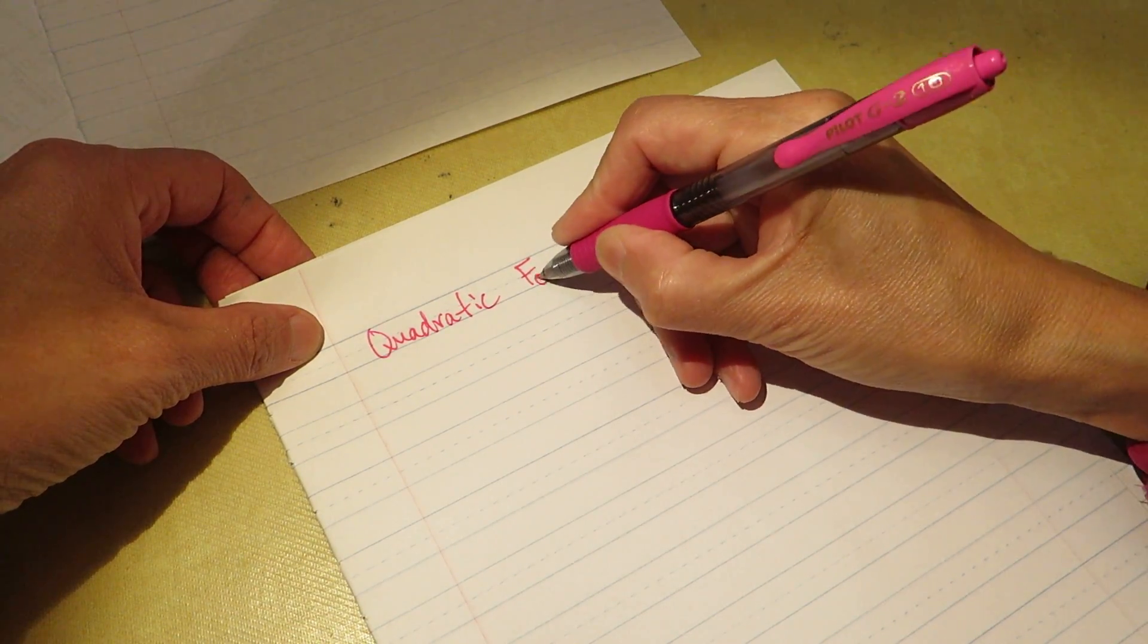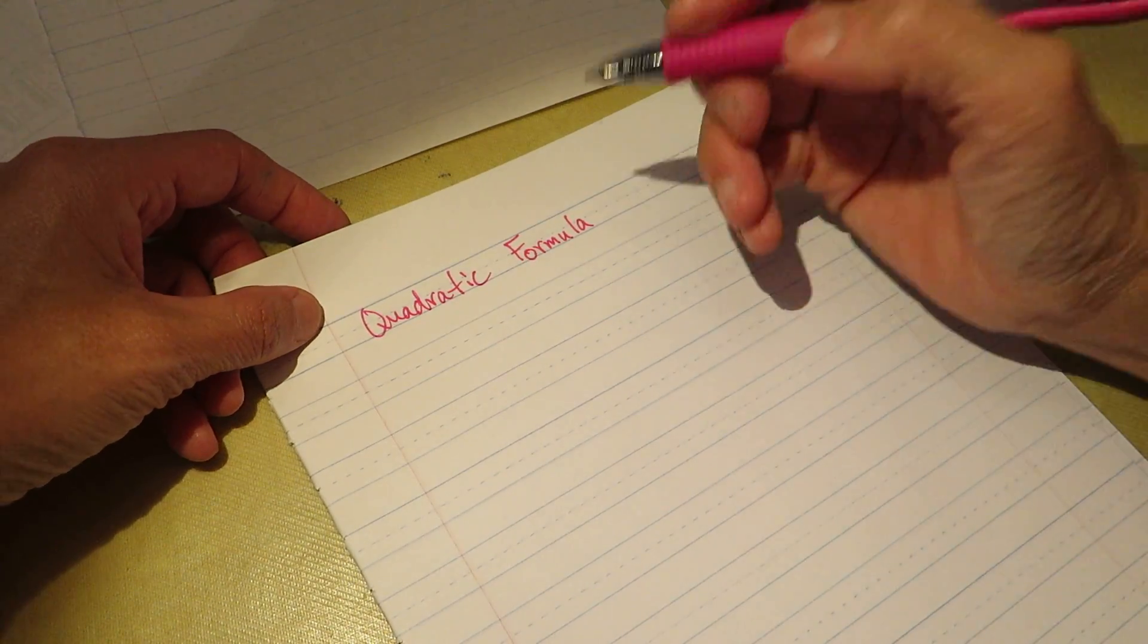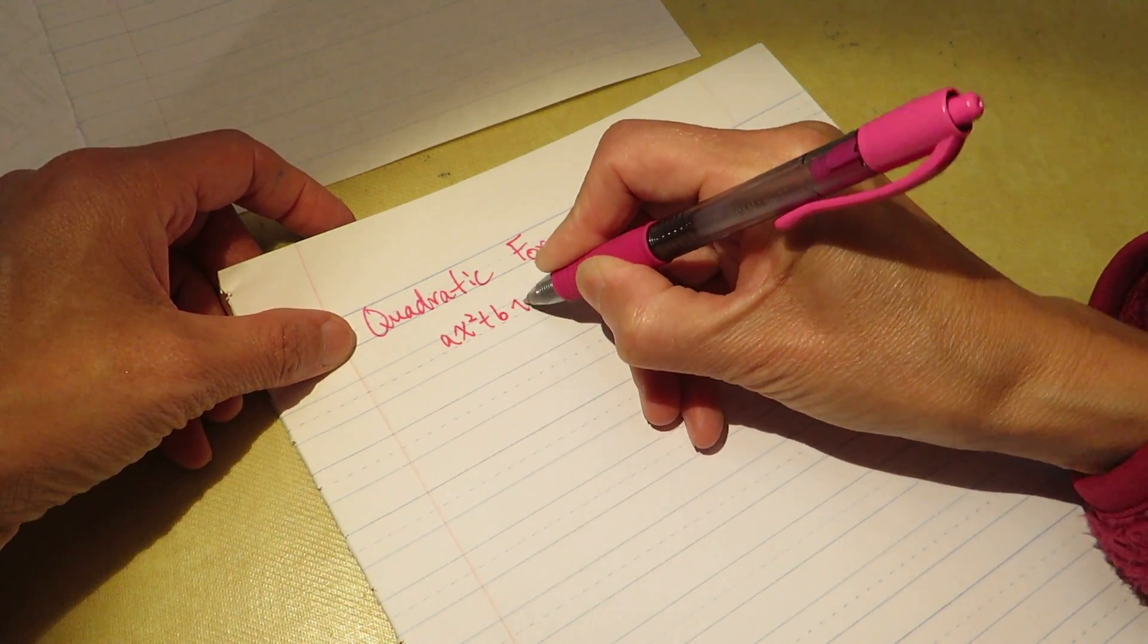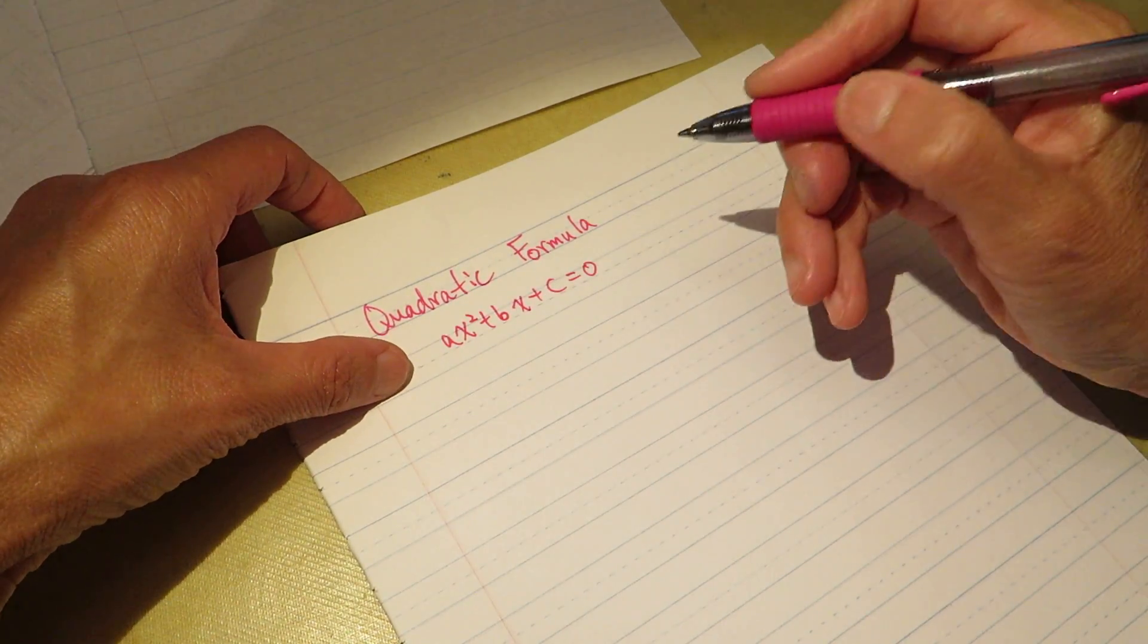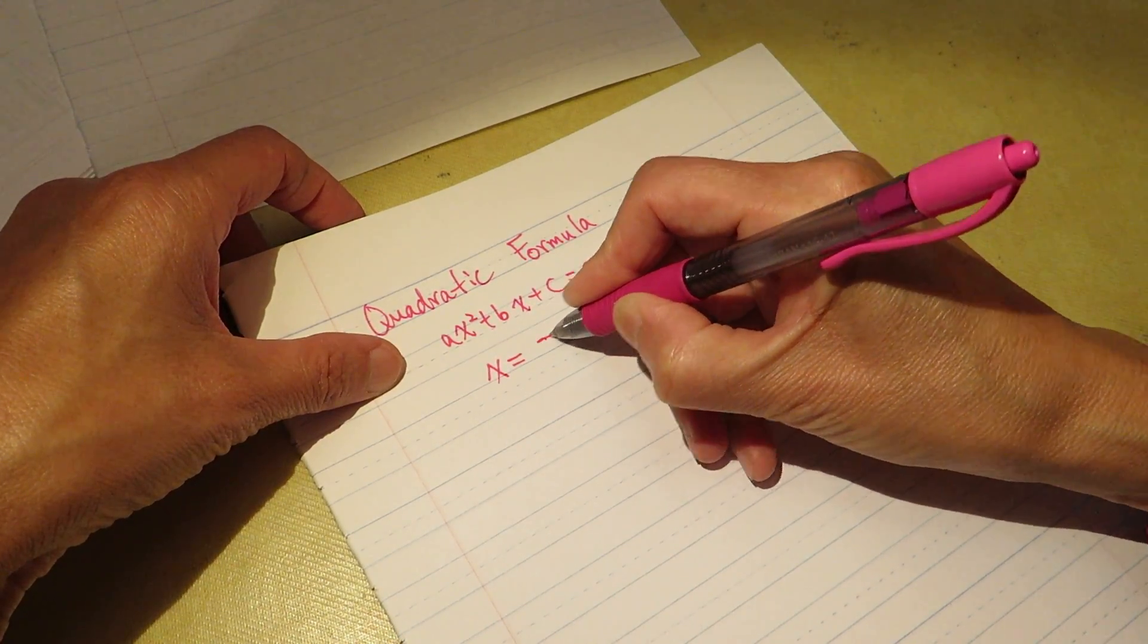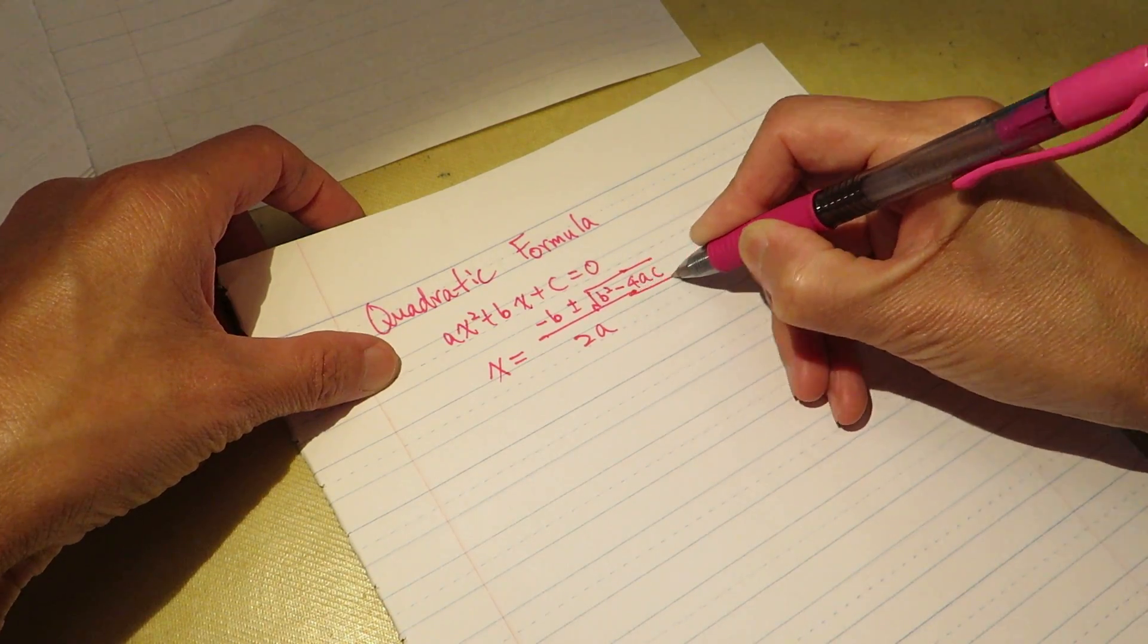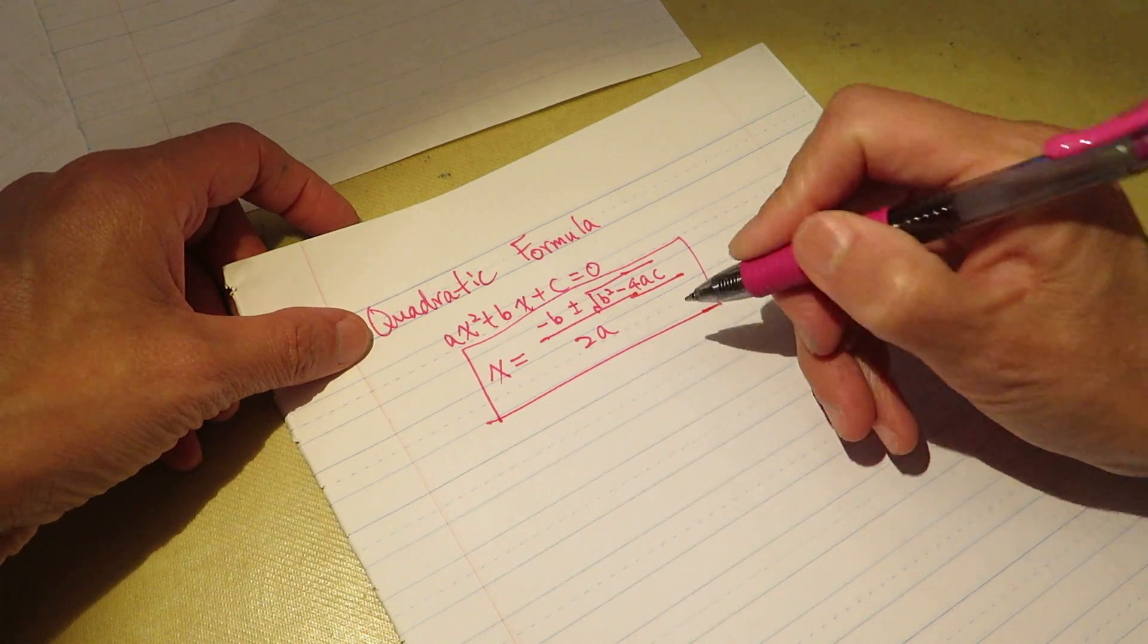We do step by step to figure out the quadratic formula. But before we figure out the quadratic formula, which means ax² plus bx plus c equal to zero, this is the quadratic standard form. And we want to figure out x equals negative b plus minus square root of b² minus 4ac all over 2a. So this is our ultimate goal today.